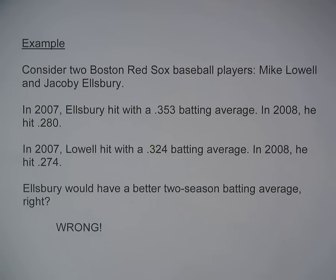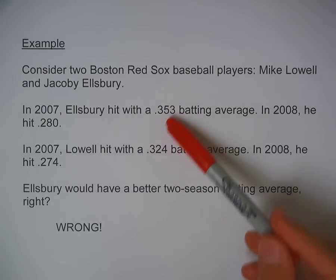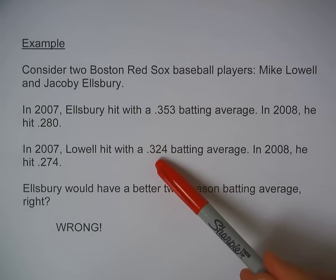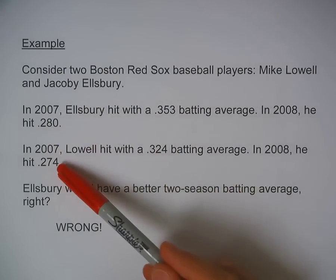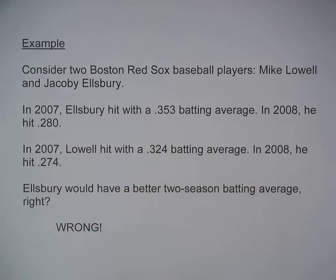So if we compare the two, Ellsbury had a higher average in 2007, and he also had a higher average between the two players in 2008. So Ellsbury would have a better two-season batting average, right? Wrong.